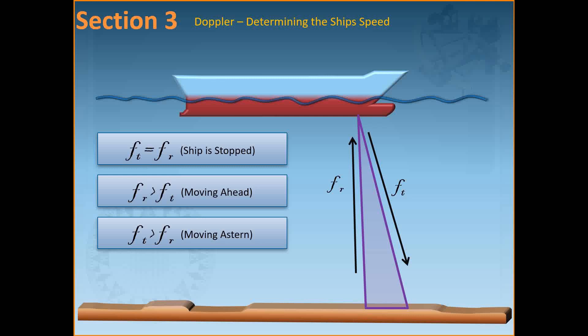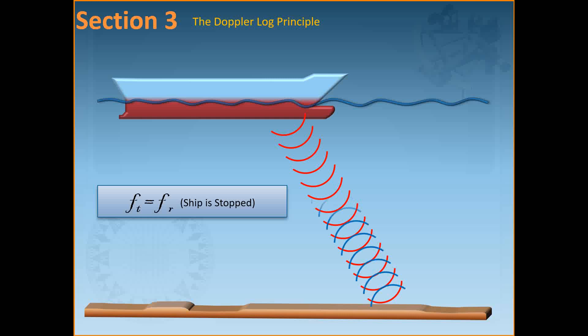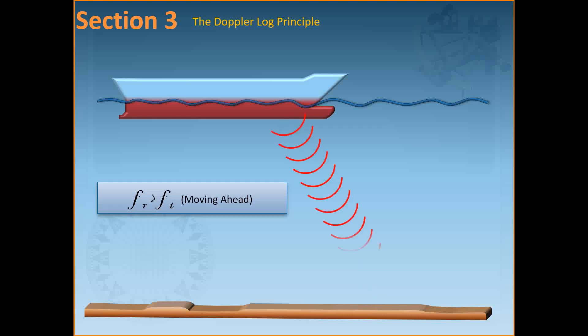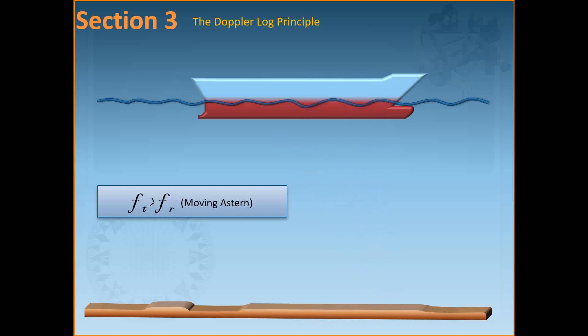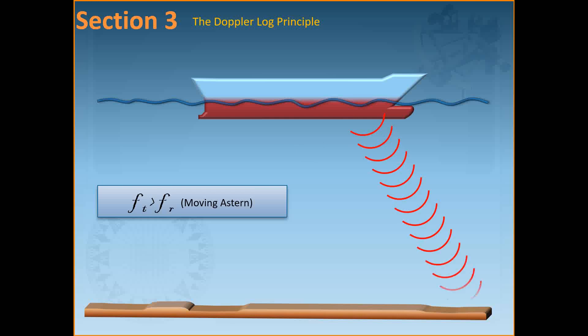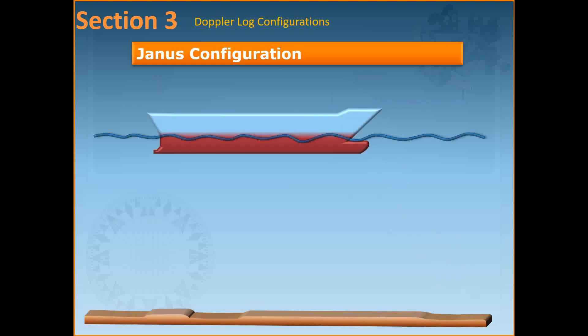If the frequency received is less than the frequency transmitted, the ship must be going astern. Through animations: when the ship is stopped, the frequency transmitted equals the frequency received. When the ship is moving ahead, the frequency received is greater than the frequency transmitted. When the ship is moving astern, the frequency transmitted is greater than the frequency received. This is the principle of the Doppler log.